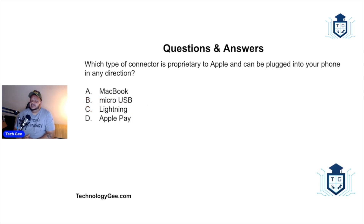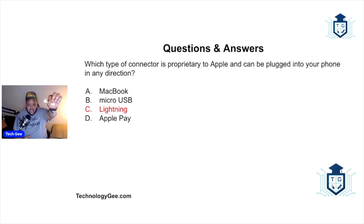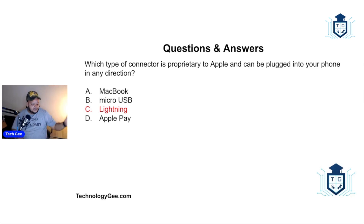Question three: Which type of connector is proprietary to Apple and can be plugged into your phone in any direction — a MacBook, micro USB, Lightning, or Apple Pay? Proprietary means it's made to work only with that company's products. The correct answer is the Lightning connector. It's essentially Apple's version of USB-C and you can plug it in either way.